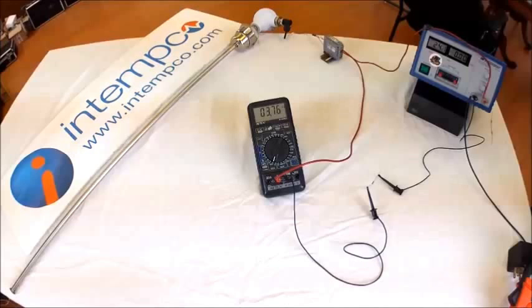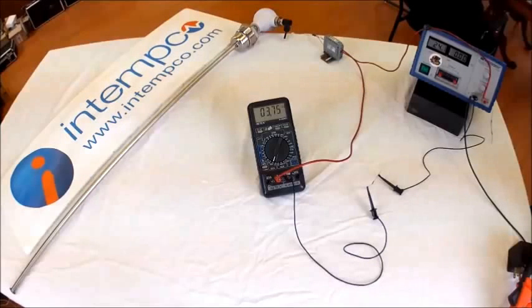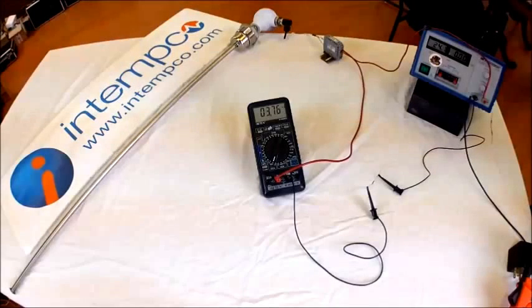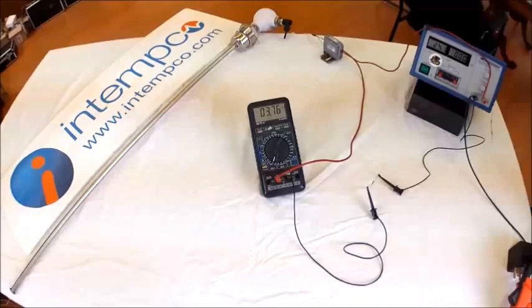So, these are the basics for a typical 4 to 20 milliamp sensor current loop. These same basics can be used for pressure, temperature, humidity, or any other 4 to 20 milliamp transmitter.